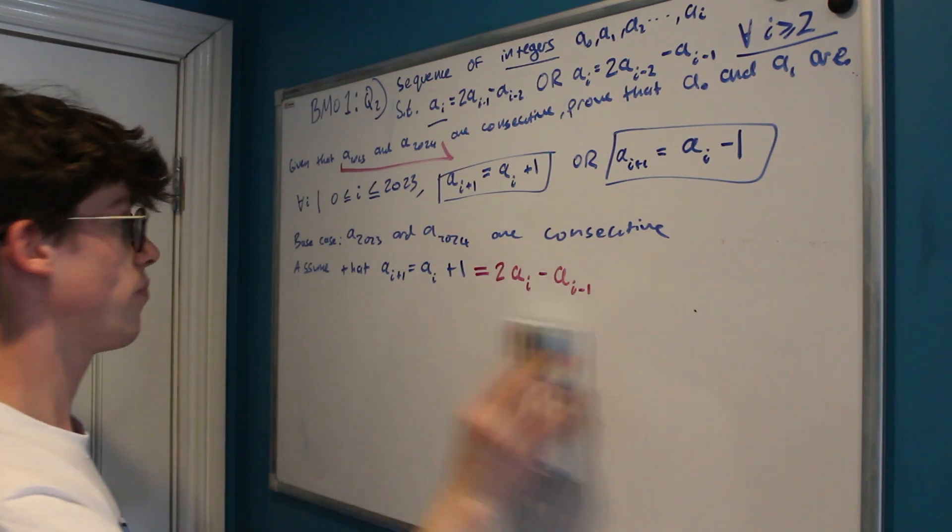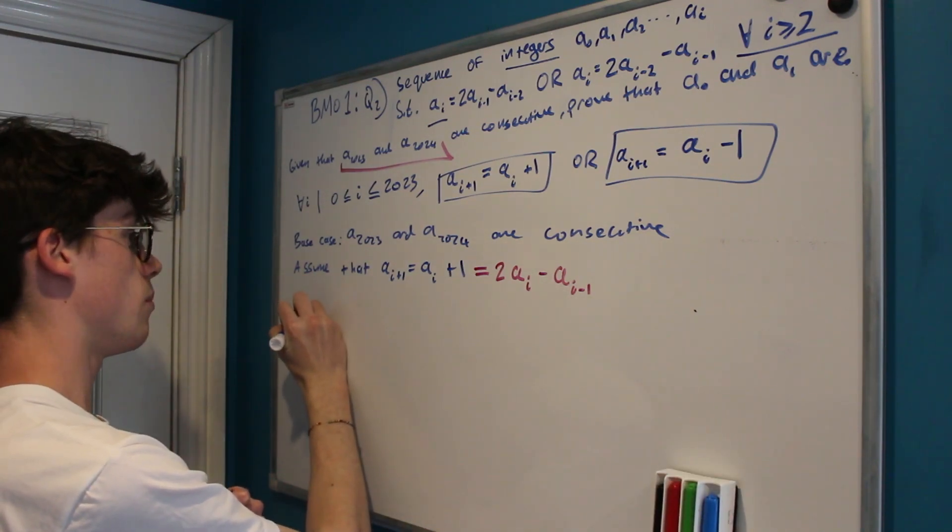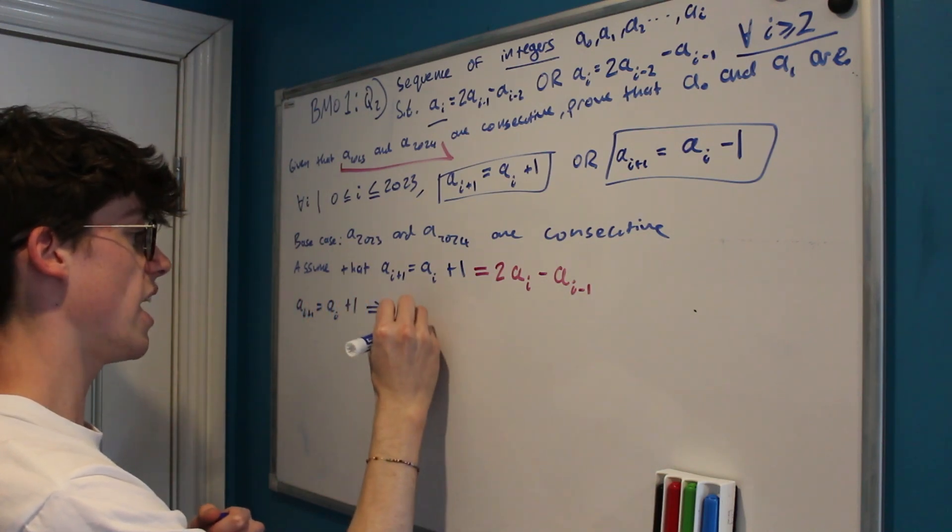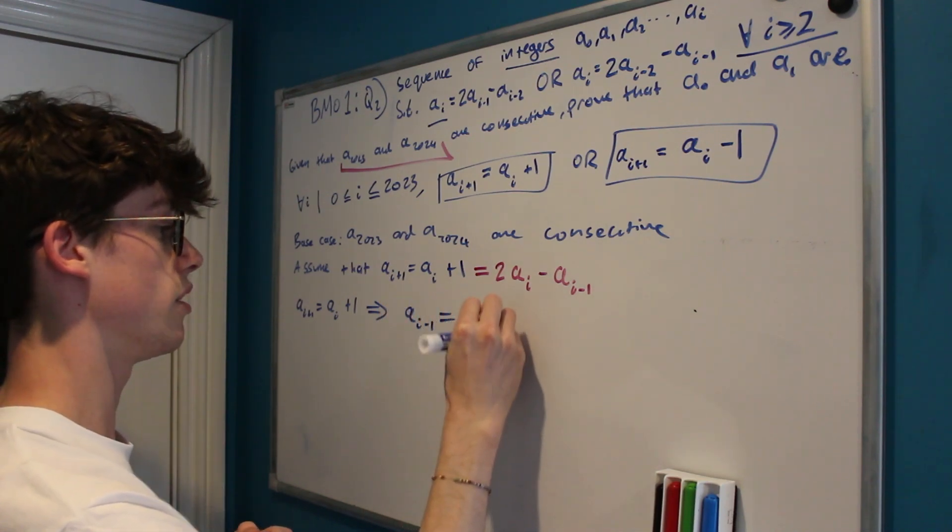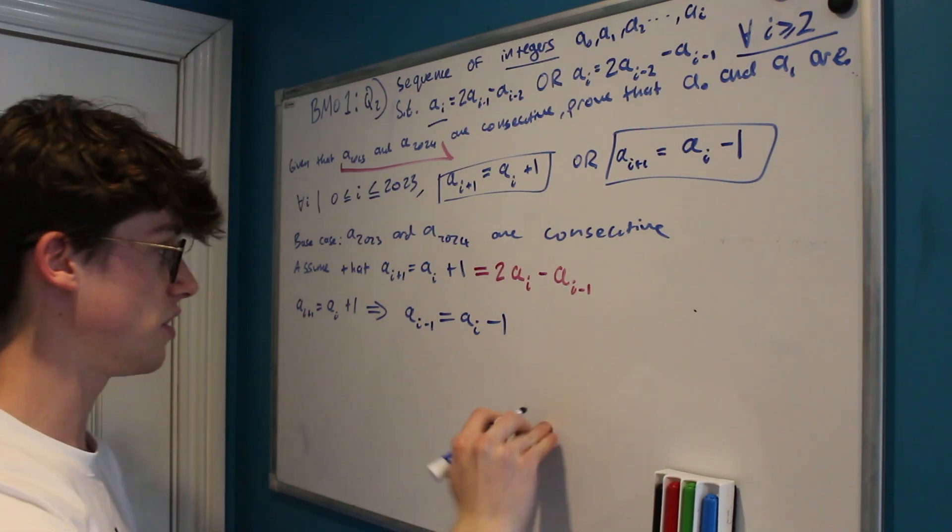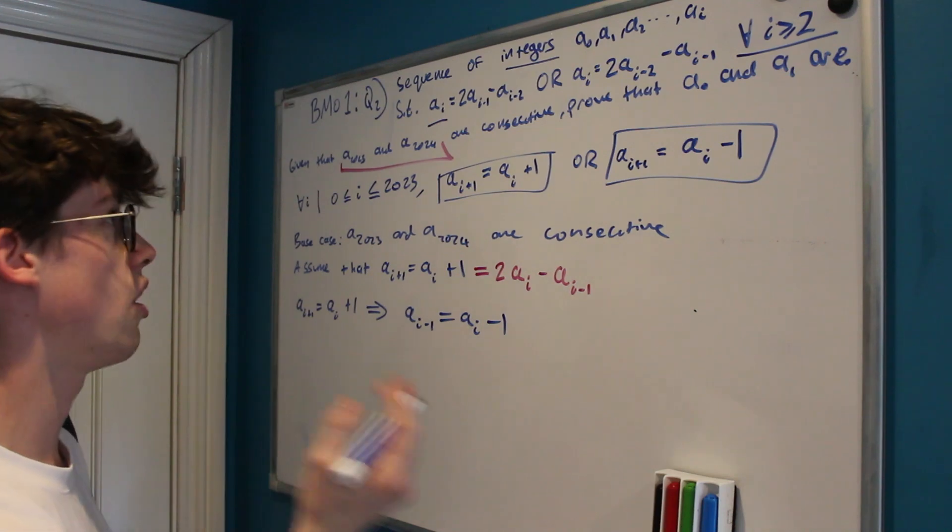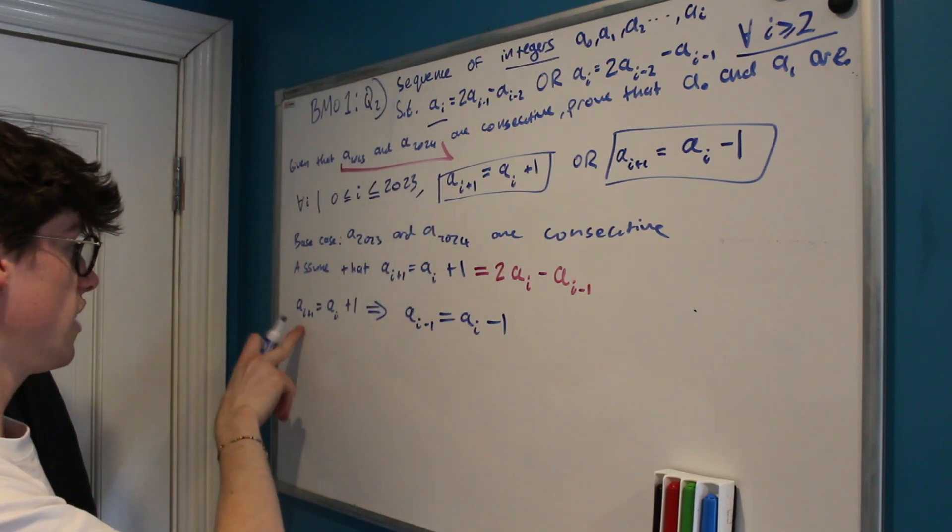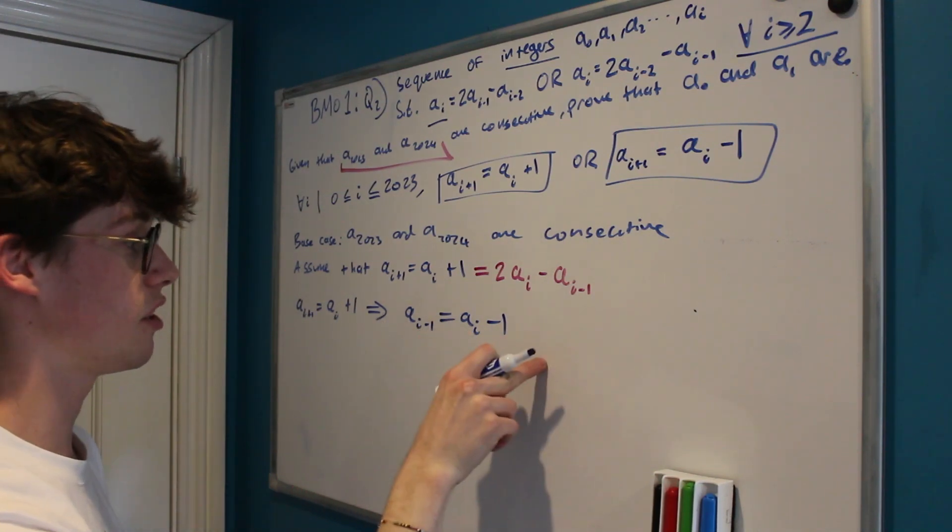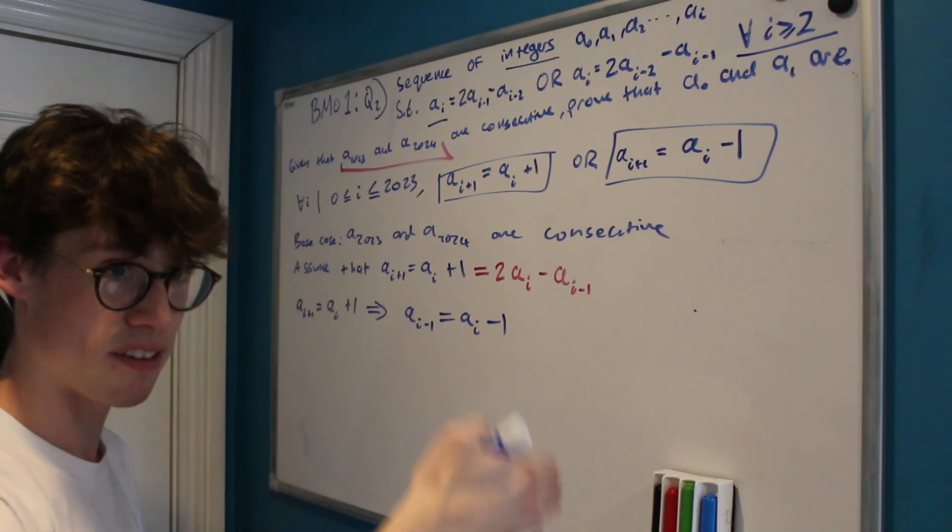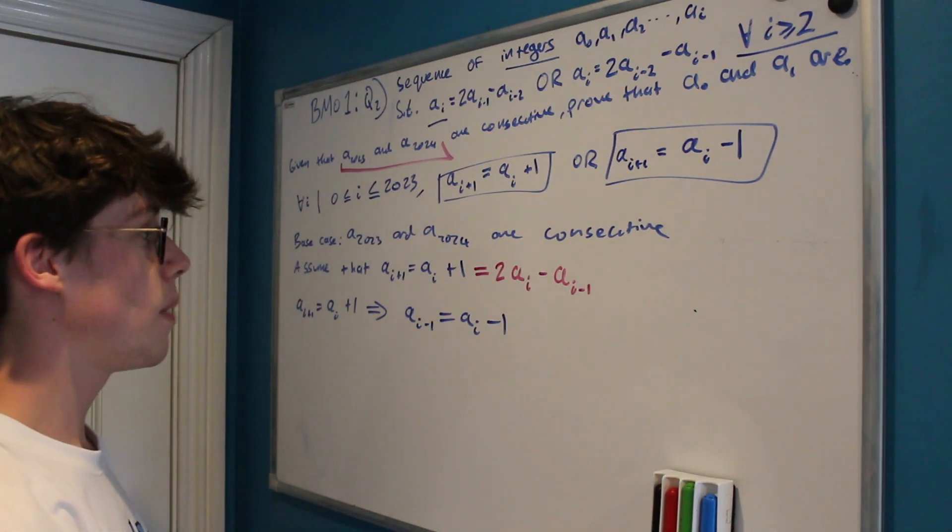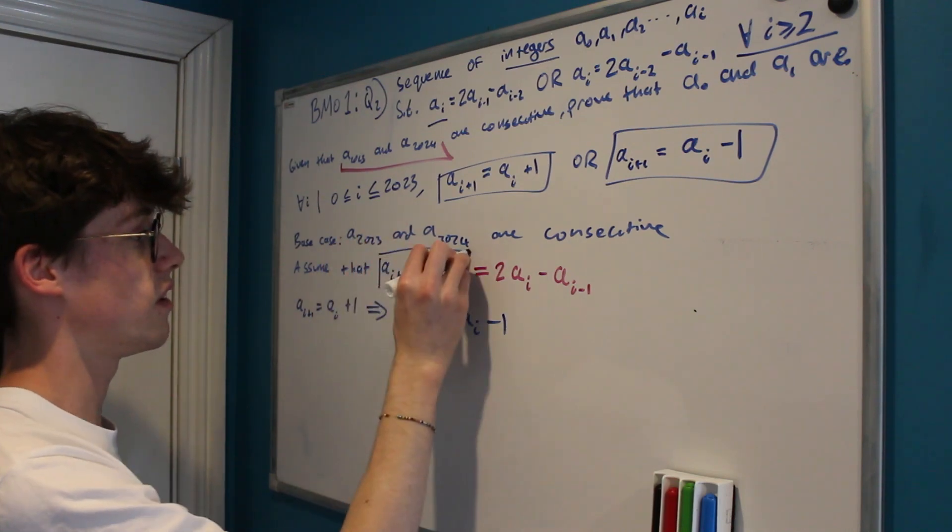So what we can say is that if ai plus 1 equals ai plus 1, it implies that ai minus 1 equals ai minus 1, and therefore we've got the inductive chain that we want. We can move along each term in our sequence. So for example if we were to choose i as 2023, we would have the a2024 equals a2023 plus 1 and a2022 equals a2023 minus 1, and then we would choose an i one lower and we could begin to find every term in our sequence. And we can see every one is going to be consecutive.